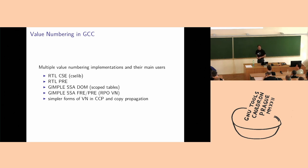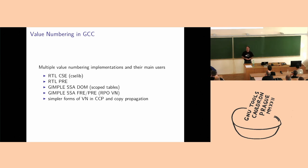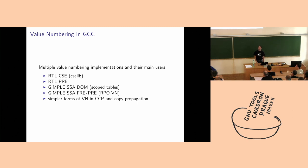Copy propagation is also kind of a value numbering — not really computing values, but copies are also kind of values, where you substitute the earliest source of the copy operation into the last destination, so all intermediate registers have the same value as the original copy.